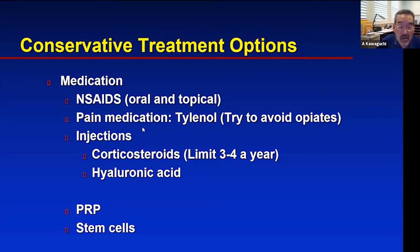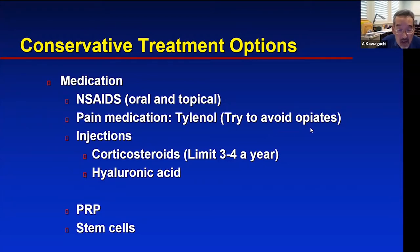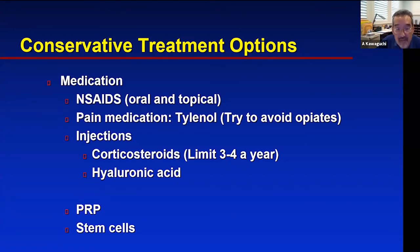A word of advice for arthritic pain: you really want to try to avoid opiates — like codeine, Vicodin, or Percocet. They are addictive. These are the type of medications you want to take right around the time of surgery to relieve pain. If you're already taking opiates before surgery, there's a high chance pain medication will not be as effective when you really need it after surgery. There are some exceptions, but that's the general rule of thumb.